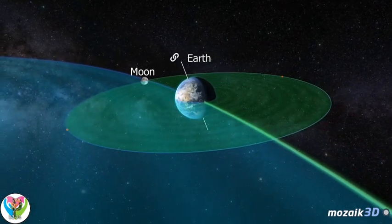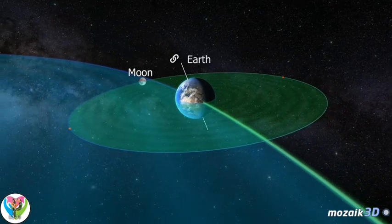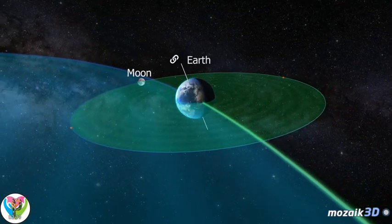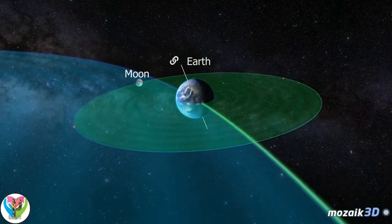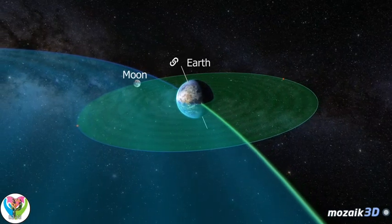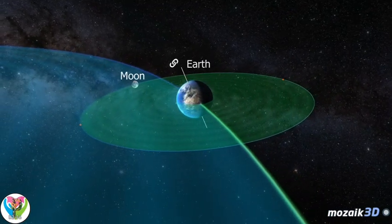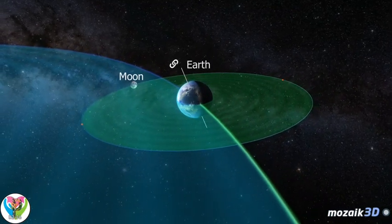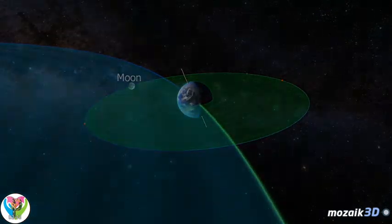The high tides caused by the Moon's gravity have an effect on the Moon as well. As a result, the Moon is slowly moving away from the Earth. Its orbit is expanding by 4 centimeters every year.